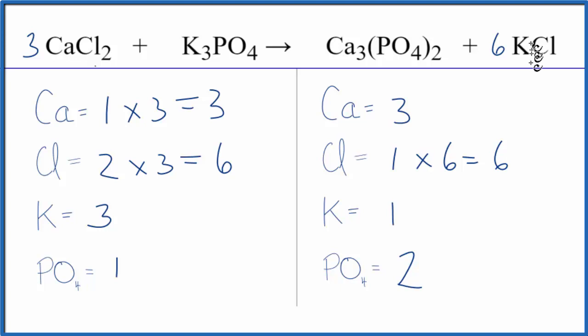And for the potassium we have one times six. So we have six potassium atoms. Let's do the potassiums. We could just put a two here. Three times two. That equals six. And for the phosphates, we have one phosphate group times two. That equals two. And we're done.